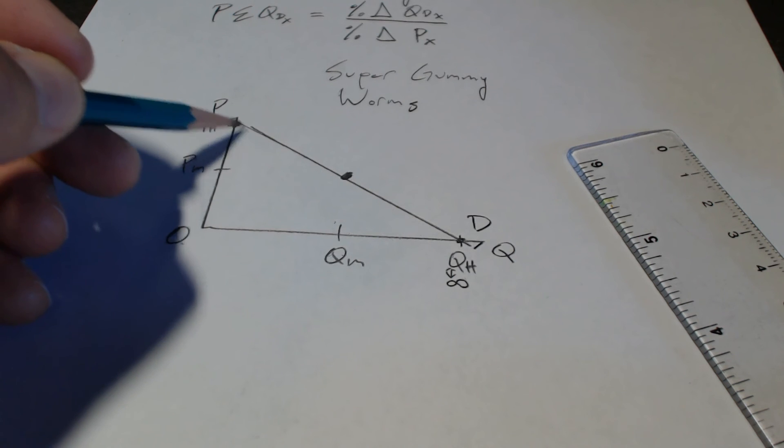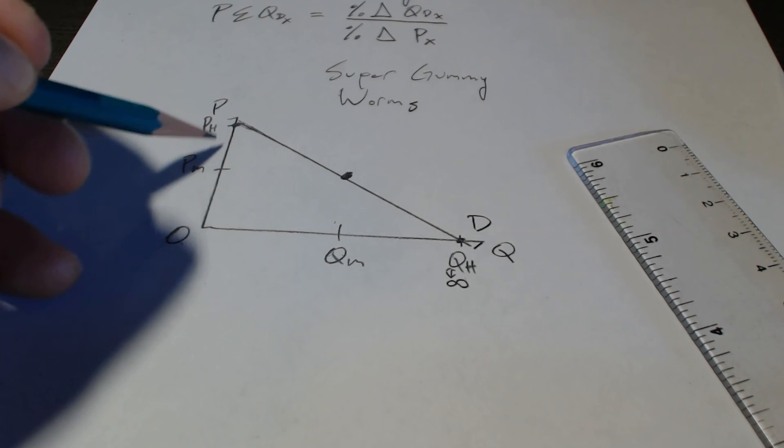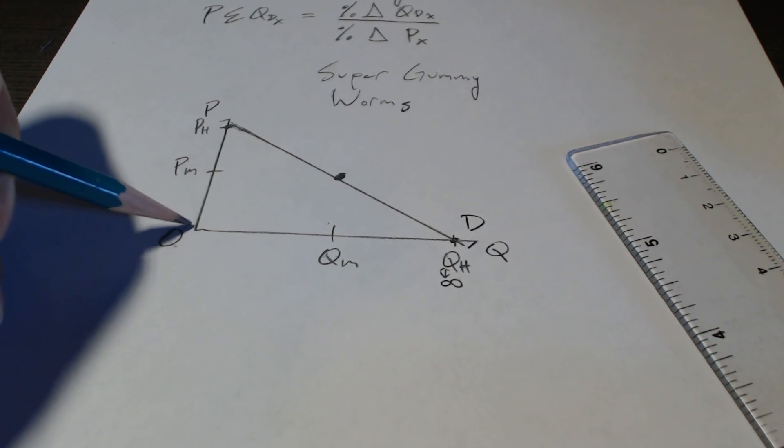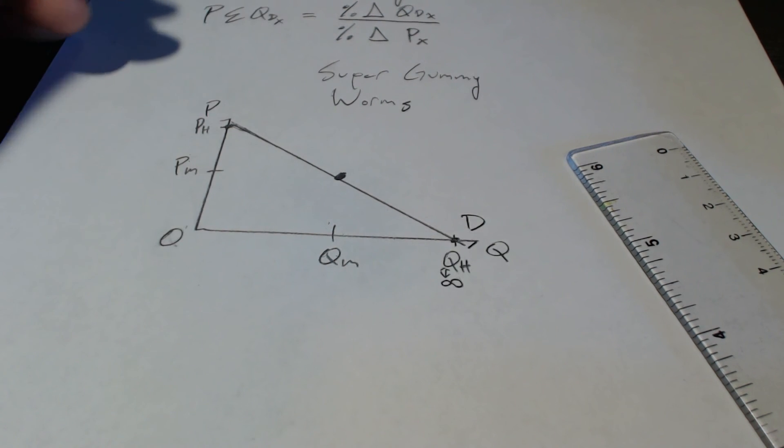If I was to algebraically calculate the value of this slope, it will obviously be a negative number. As price goes up, quantity demanded goes down. As price goes down, quantity demanded goes up. That means it's an inverse relationship. It's an opposite relationship.